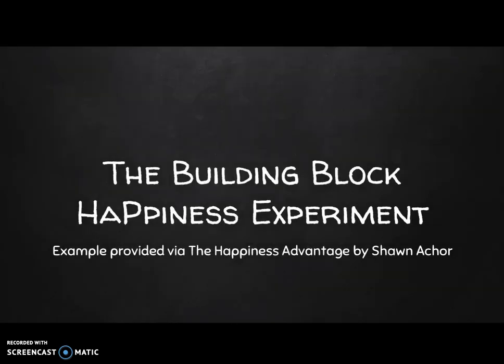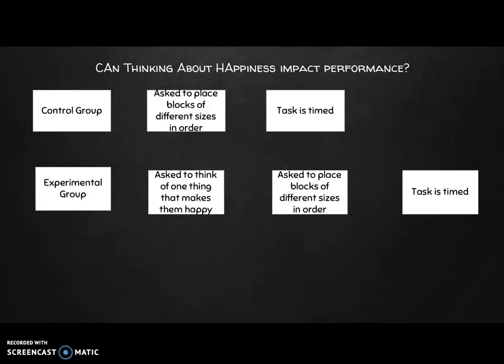Today we're going to be discussing the building block happiness experiment. This example is provided from a book called The Happiness Advantage by Sean Achor, where he does academic research on happiness and neuroplasticity. I realized as I was reading it that it would work well for demonstrating what we need to understand in relation to building a replicable model. The question was: can thinking about happiness impact performance? We're not focusing on the research question itself — just on the method and whether or not it might be able to answer that question.